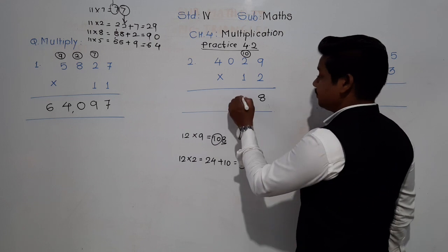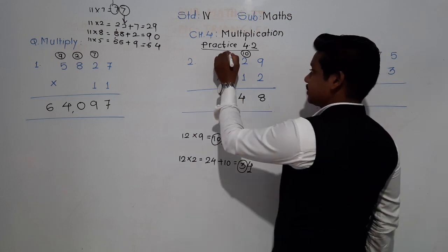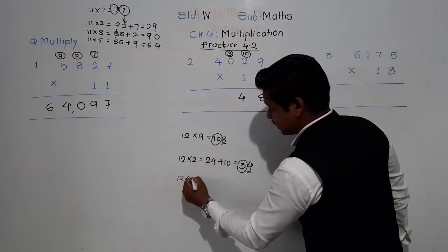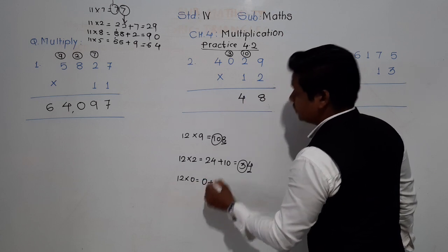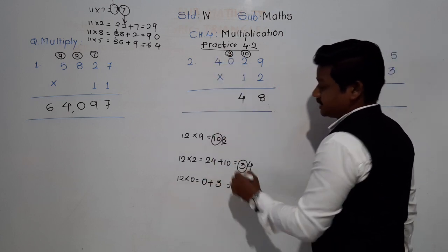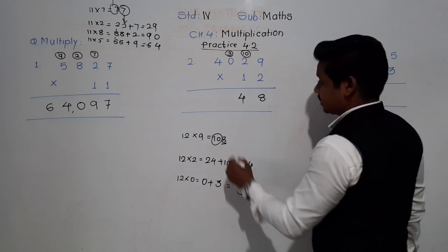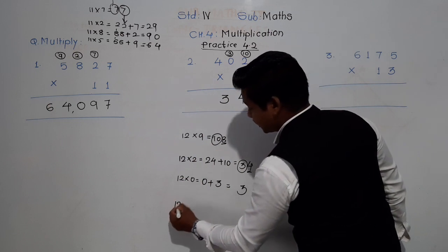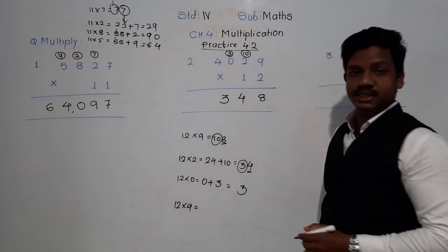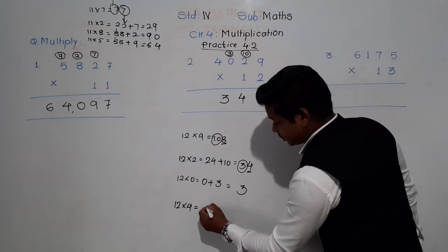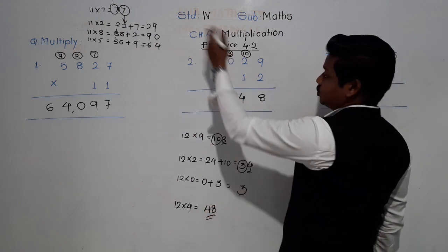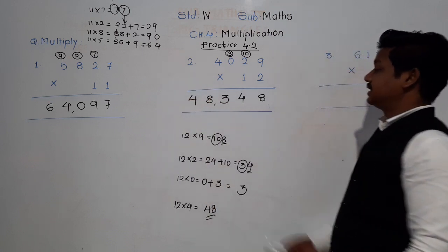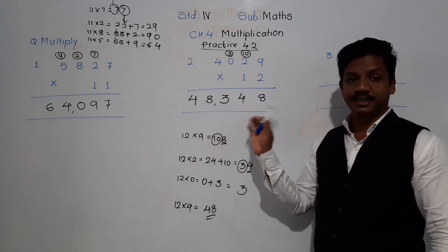Then 12 zeros are 0, plus this 3, which is 3 only, no carry. Then 12 fours are 48. Here there is no carry, so directly write 48 here. So the answer is 48,348.